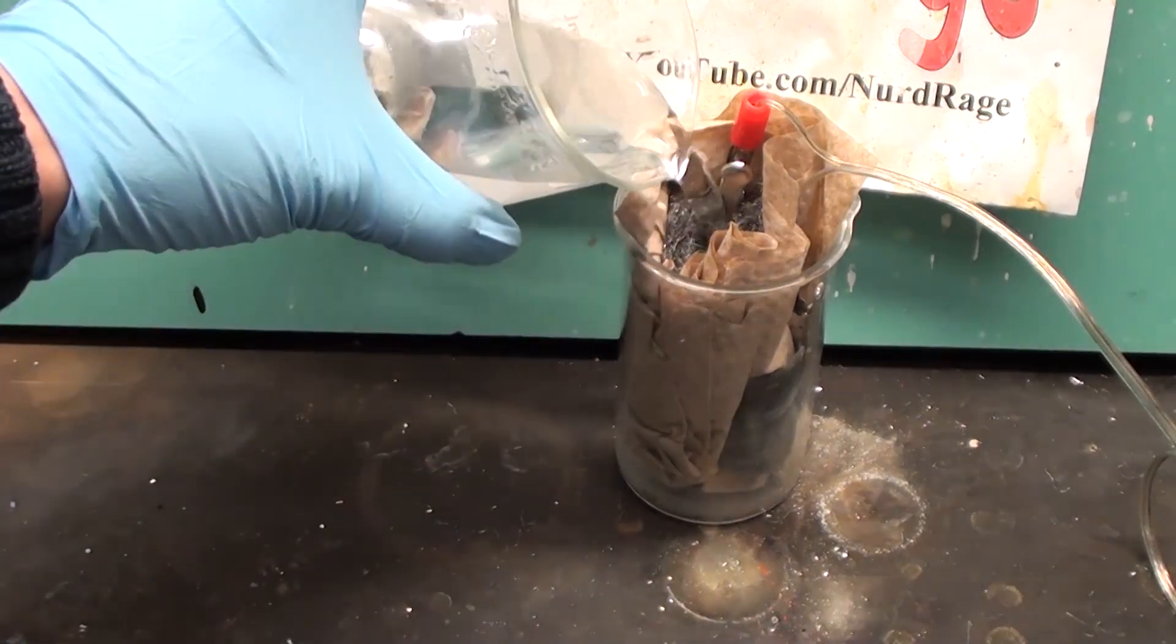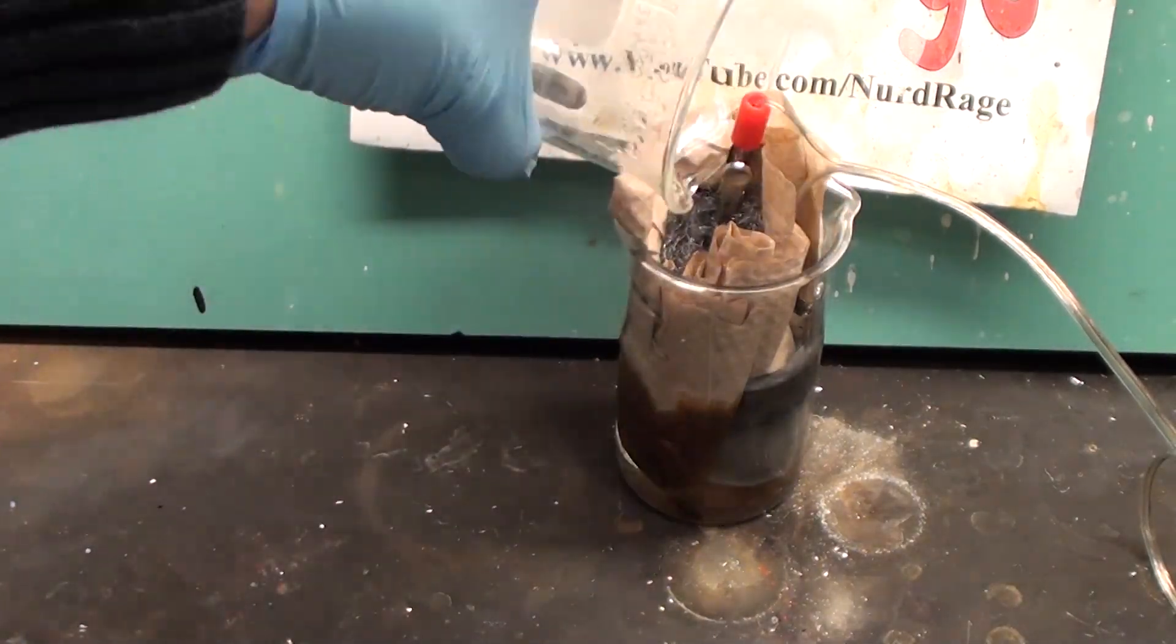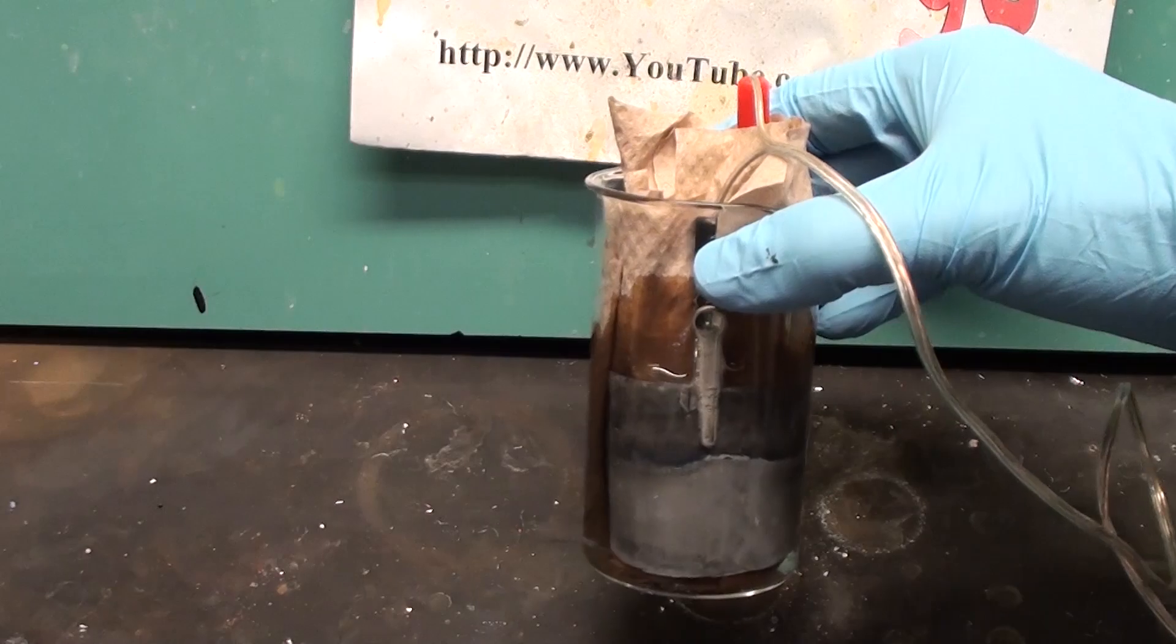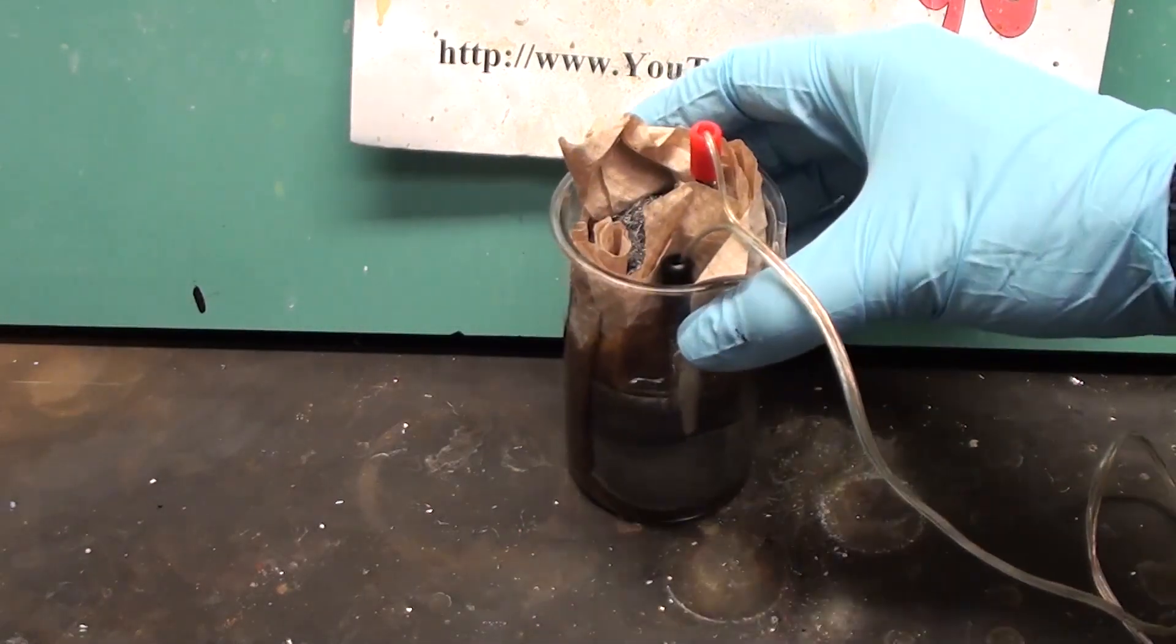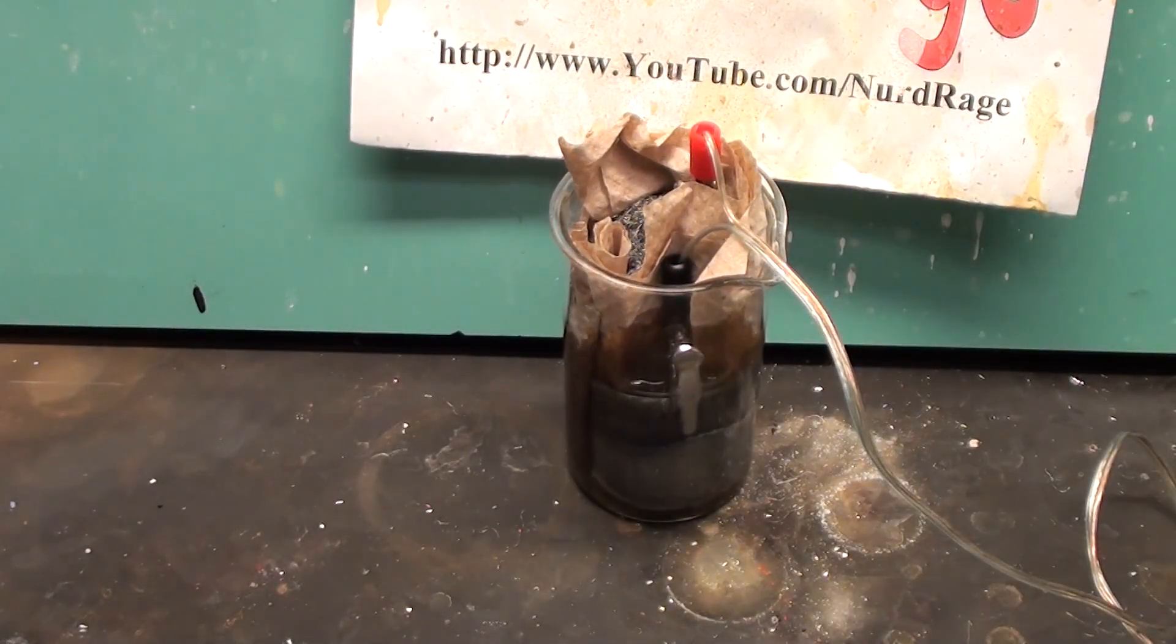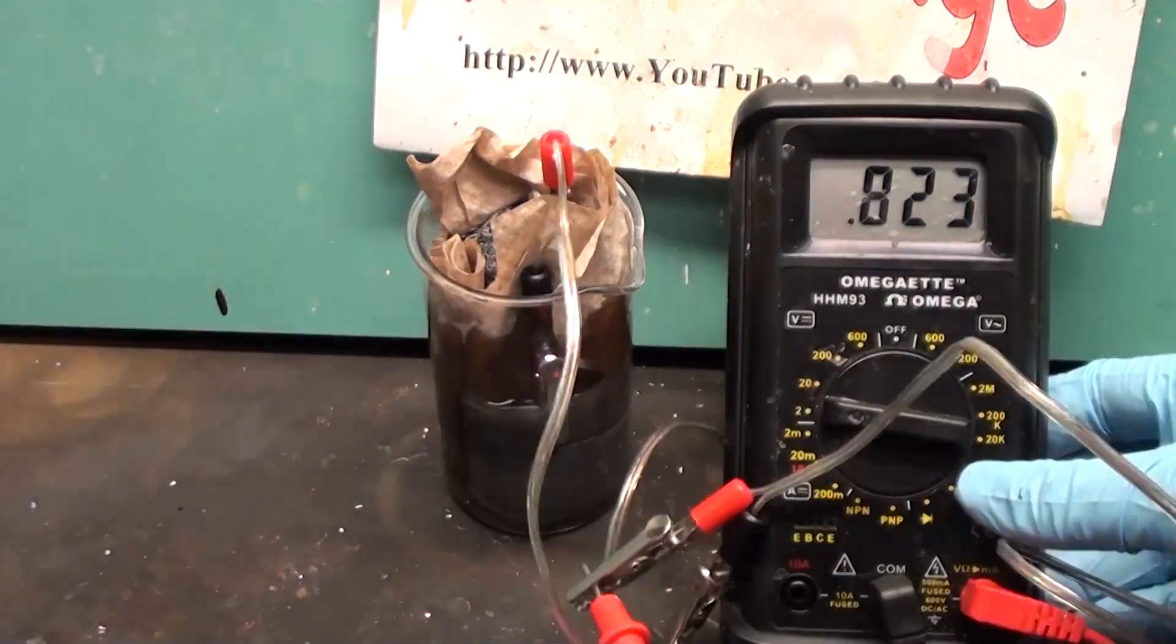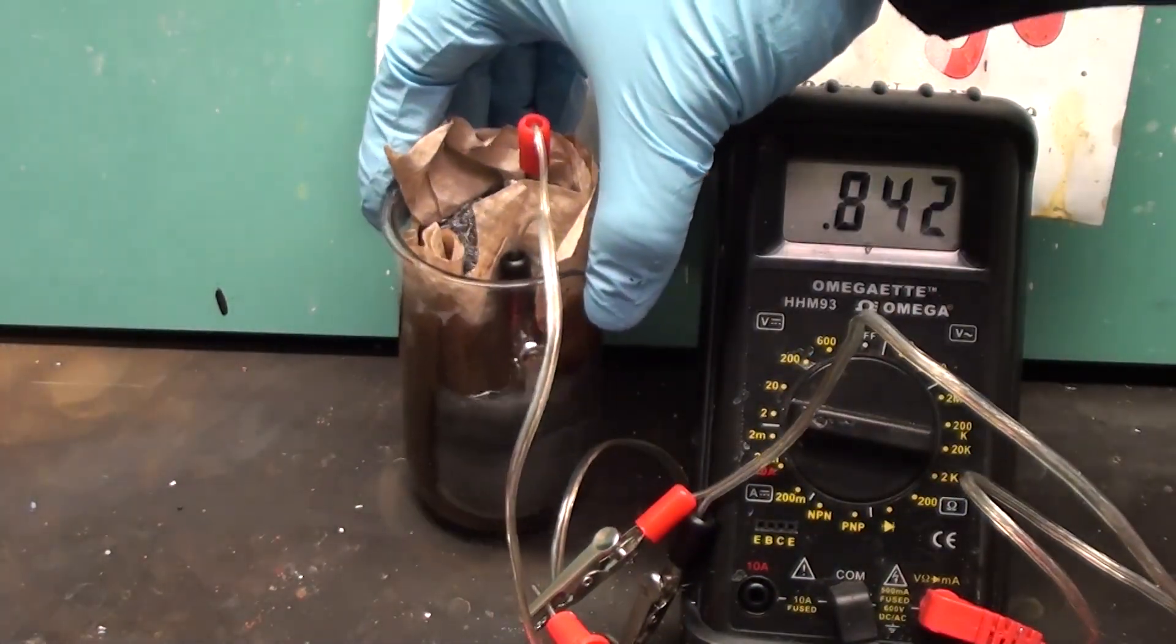To activate it we just mix up and pour in the sodium hydroxide electrolyte. And that is a zinc air battery. Let's measure its output. Connecting it to the multimeter we see the voltage is around 0.84 volts.